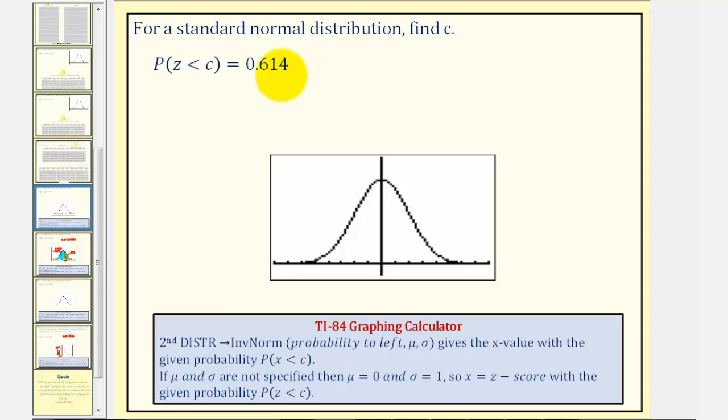Notice how here we have the probability of Z being less than C, and therefore, if we find the Z-score on the standard normal distribution, the area to the left of that Z-score would be the same as this probability, 0.614.